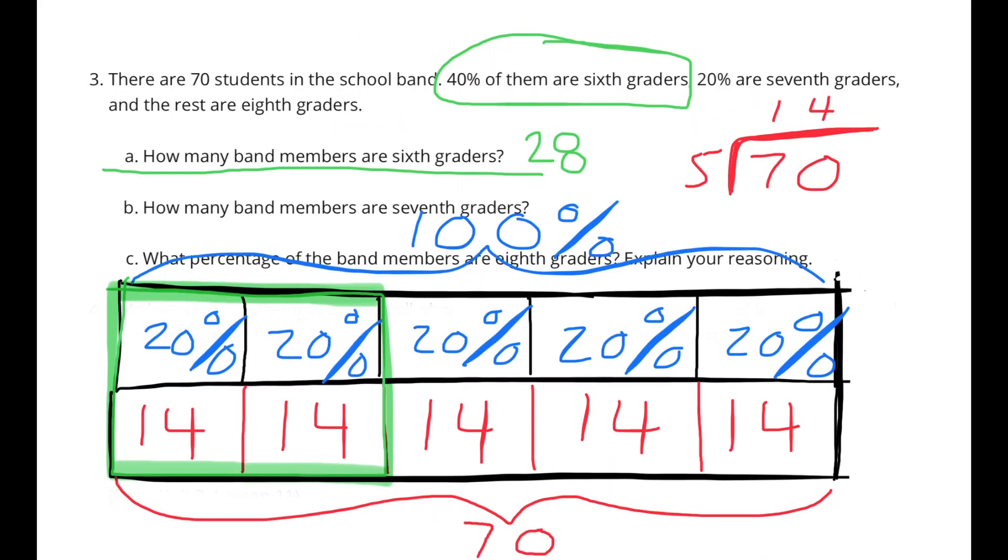Number 3: There are 70 students in the school band. 40% of them are 6th graders, 20% are 7th graders, and the rest are 8th graders.